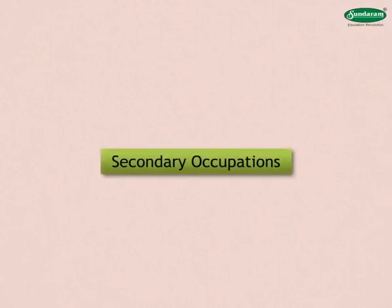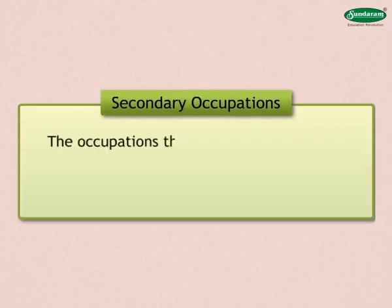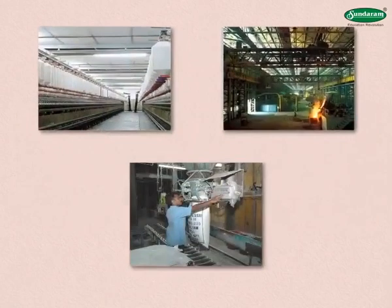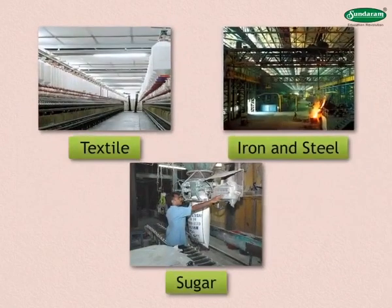Secondary occupations. What are secondary occupations? The occupations that process raw materials and produce new materials are called secondary occupations. Examples include textile, iron and steel, or sugar producing industries.